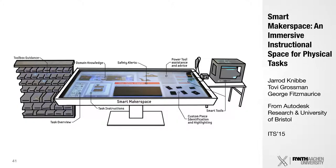The next thing: when you come into these open spaces and work with these machines, you're often missing instructions. You might have found something online, but this turns you into having a computer next to you and your tools on the other side — usually not optimal. So Knibber et al. basically came up with the smart makerspace, an immersive instruction space for physical tasks, creating an artifact that guides users through the assembly process.